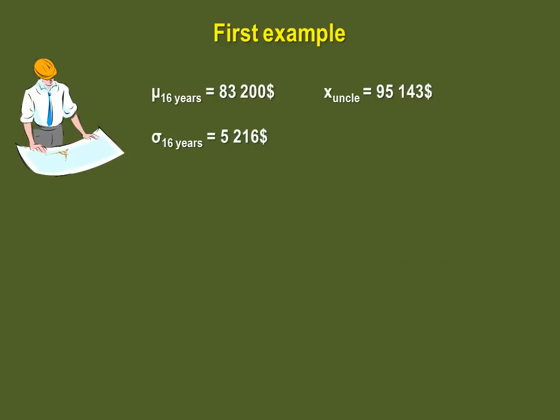Step 3 is stating the level of significance. Since nothing else was mentioned, we choose alpha to be equal to 0.05.